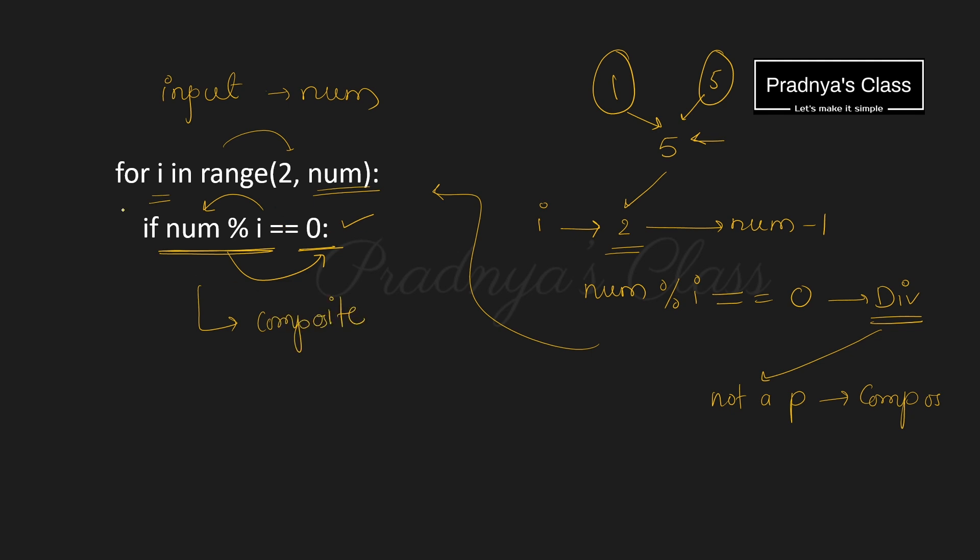After checking for all the values of i, the loop will terminate. And we will write the else part of the loop. Number is not divisible by any other number. It means it's a prime number.